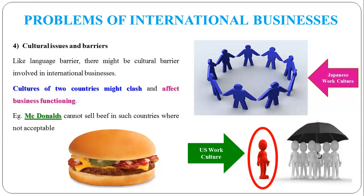We can take the example of McDonald's. The actual burger is a beef burger, but McDonald's cannot sell beef burgers in countries where beef consumption is not acceptable, such as India. When they introduced the burger in India, they modified it to something people would accept. If they had launched the beef burger, people would definitely not have accepted it. This is a cultural issue and cultural barrier that McDonald's had to face. Similarly, looking at Japanese work culture, they have a lot of emphasis on group activities, whereas US culture places a lot of importance on individual performance. Every country has a different culture, which can impact international businesses.